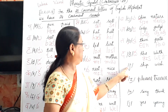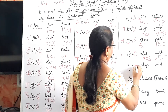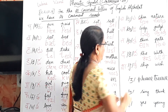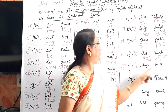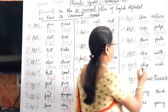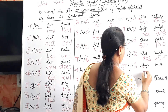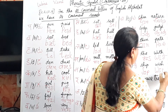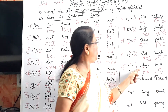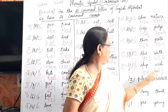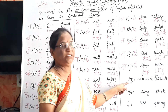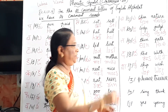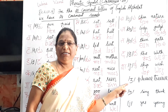This is the /ʃ/ (sha) sound. Ship, wish. Wish, ship — now next, this is the /ʒ/ sound — the aeroplane sound. There is no /ʒ/ sound in our Indian language; it is totally different.